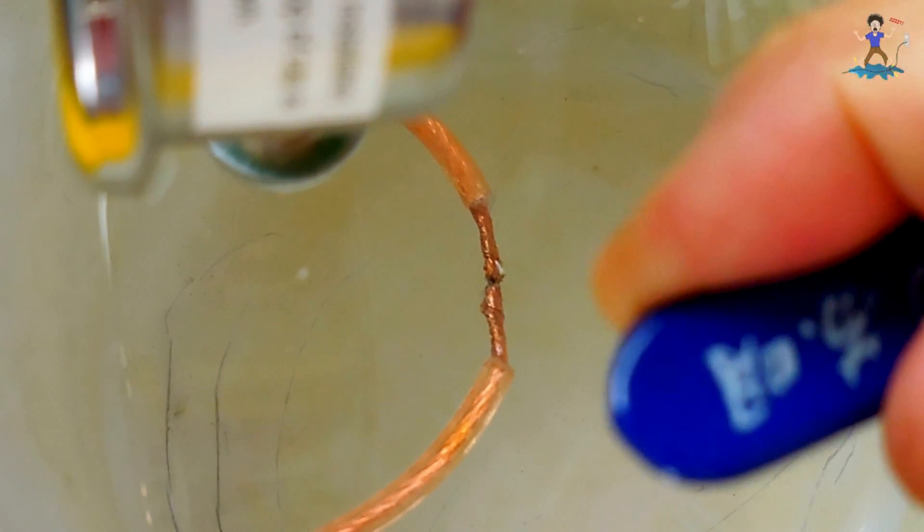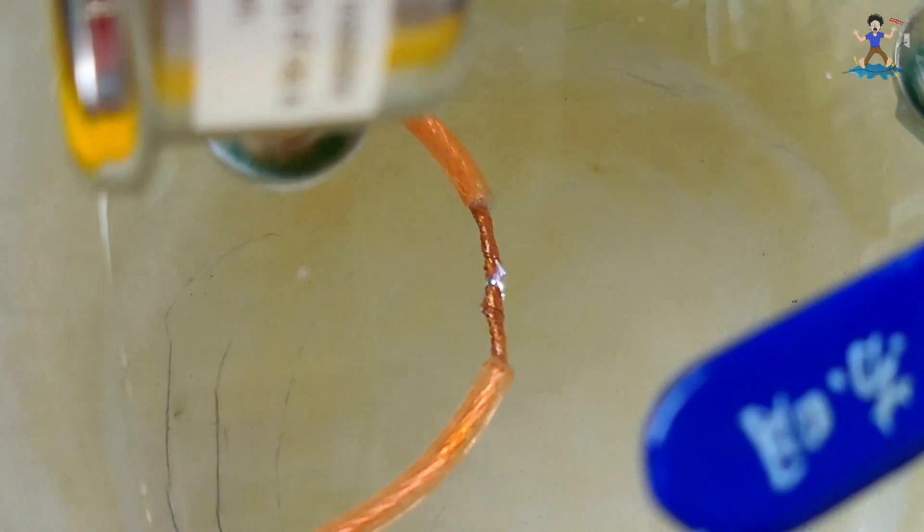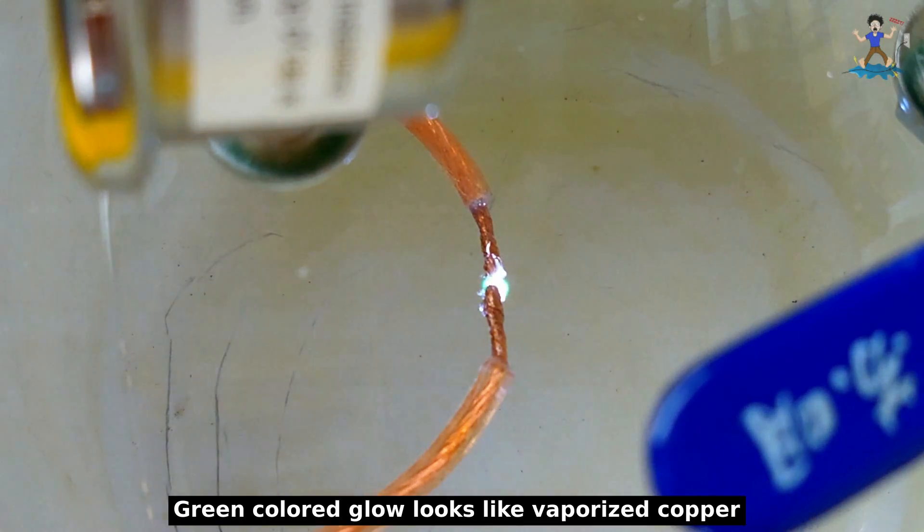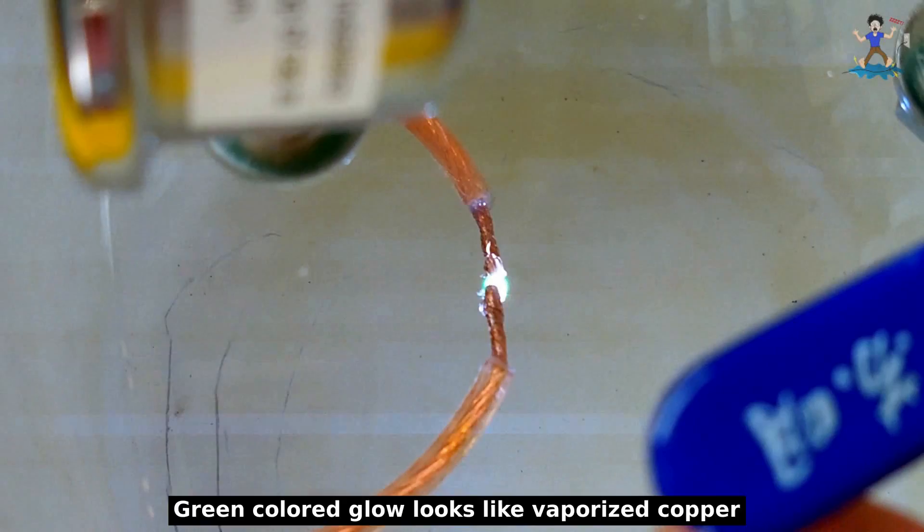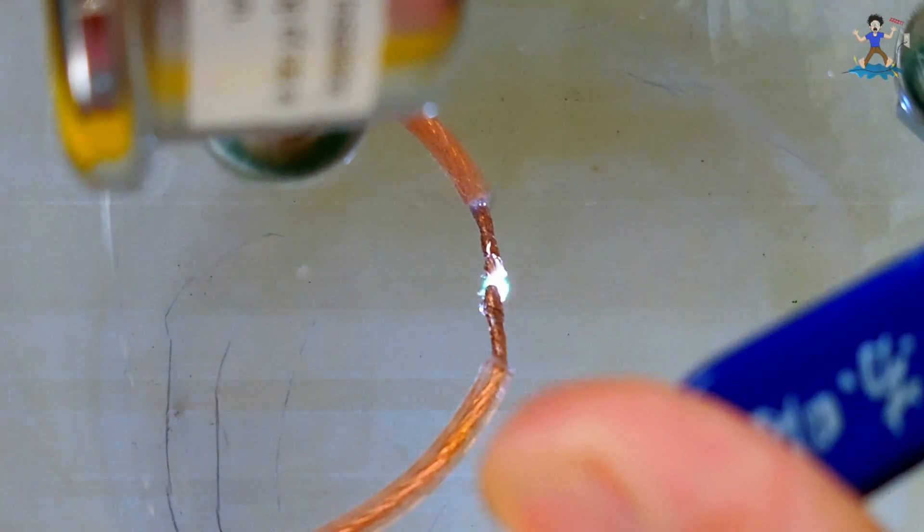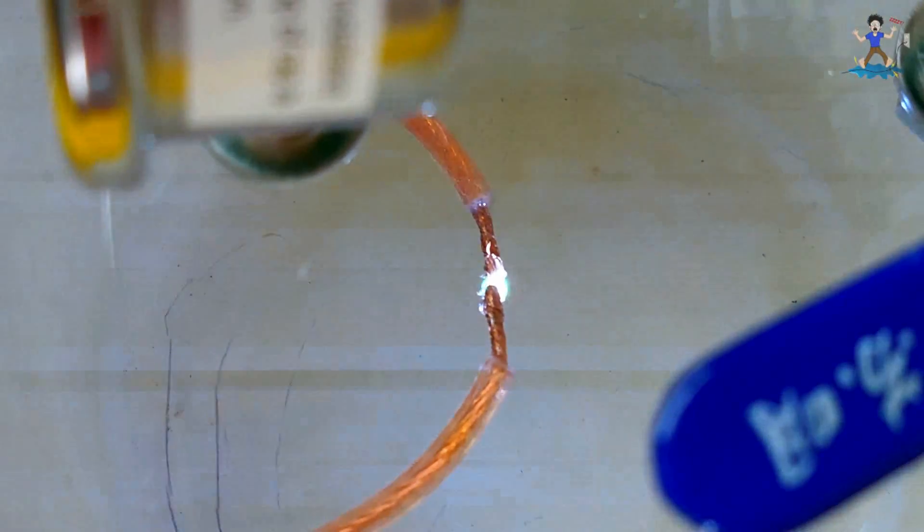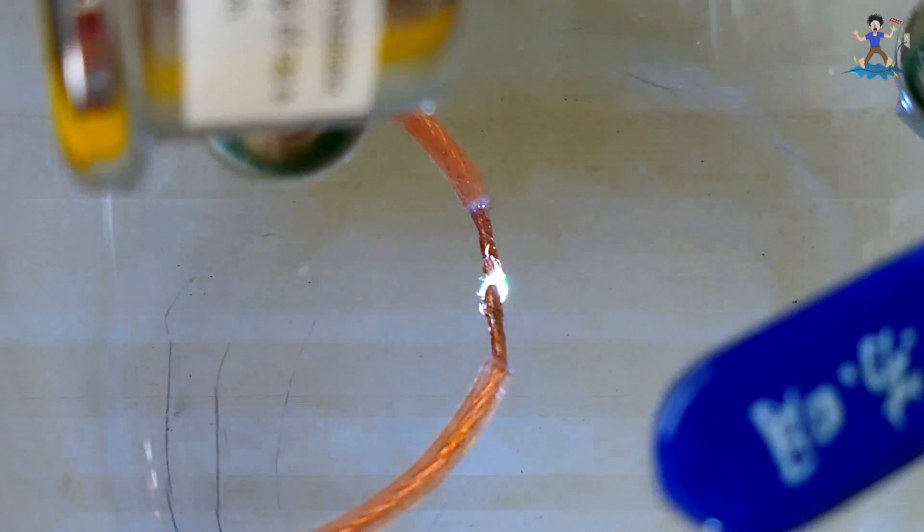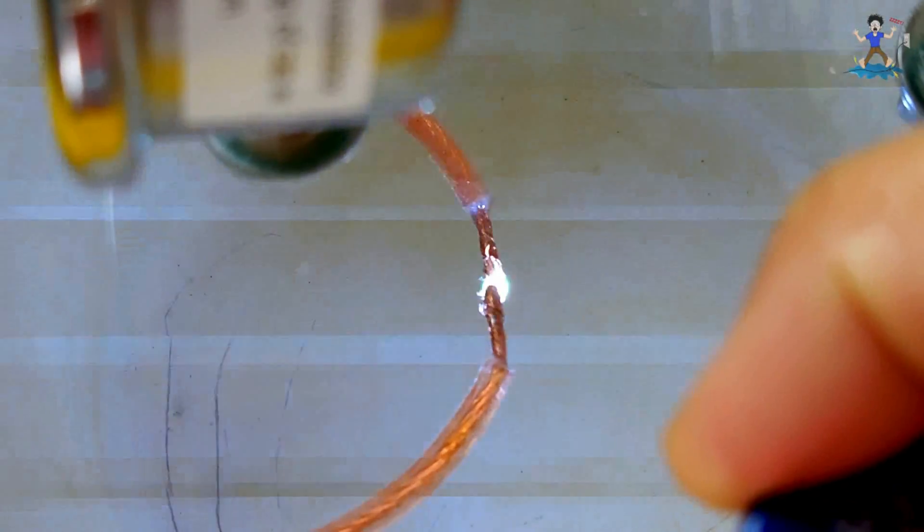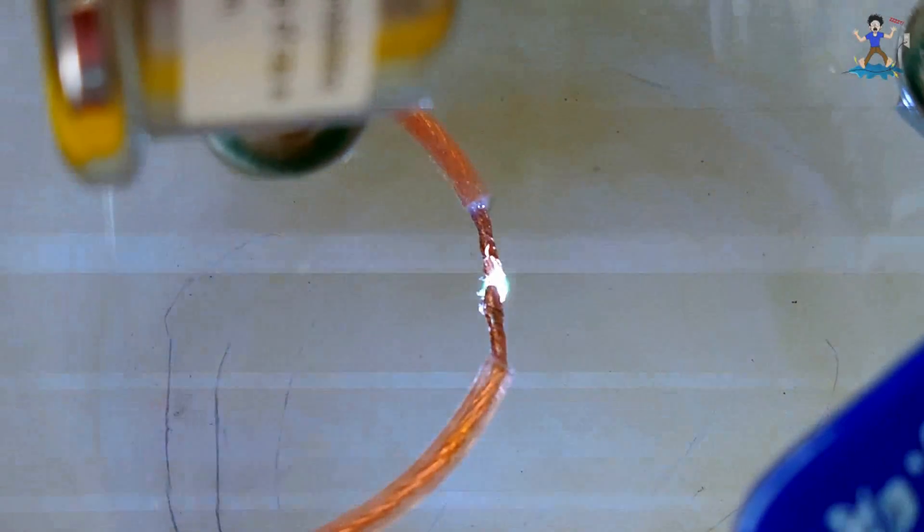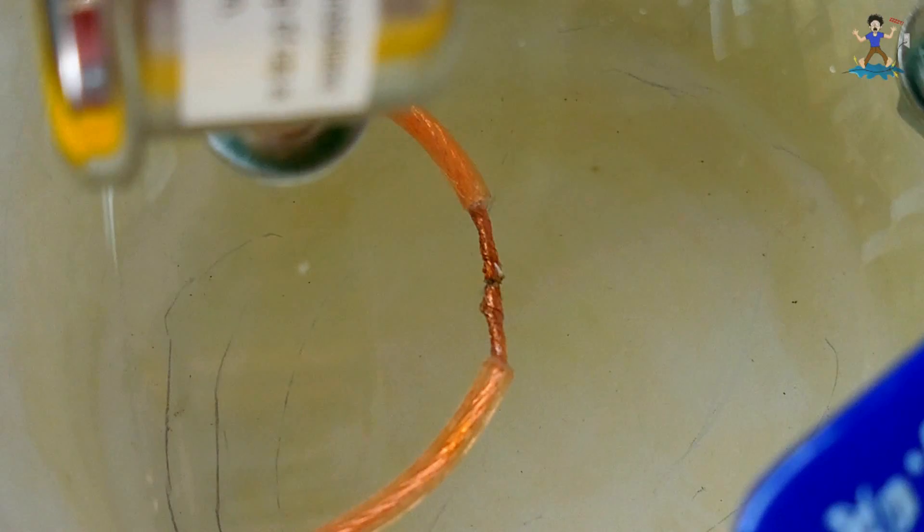And now it arcs. You can see the interference in the camera as well.